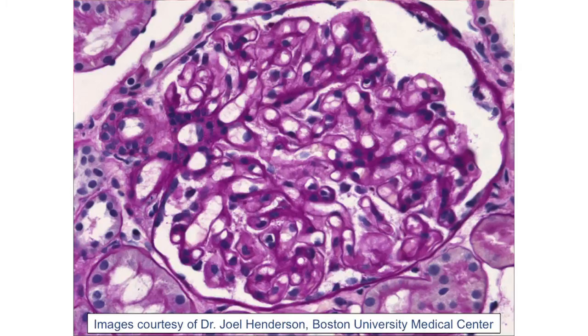If we take a normal light microscopic image, or PAS stain, of membranous nephropathy, we see diffuse thickening of the basement membranes — and that's what gives the name membranous nephropathy, the thickened membranes. We also notice in this picture that there's normal cellularity, minimal proliferation of cells, and no inflammatory infiltrates.